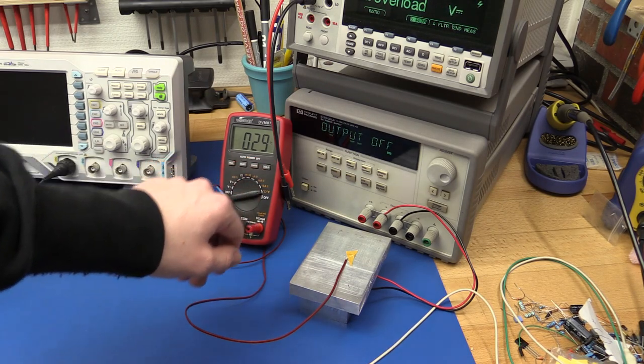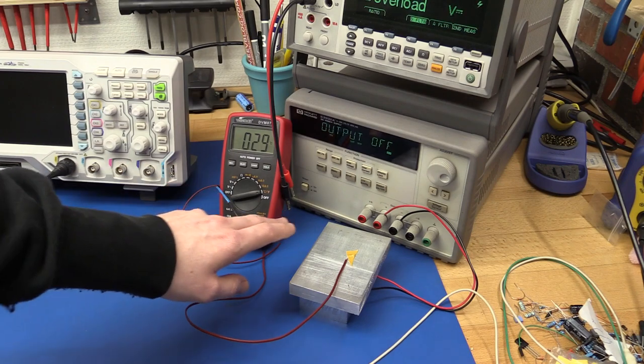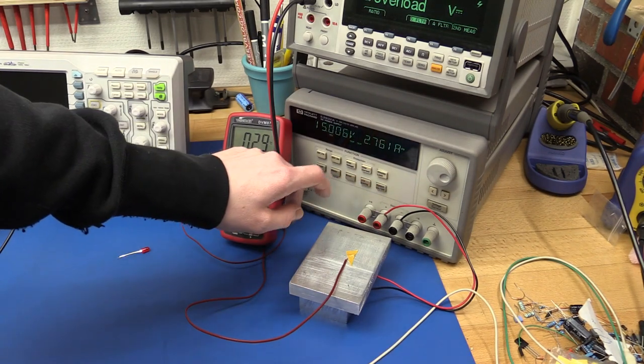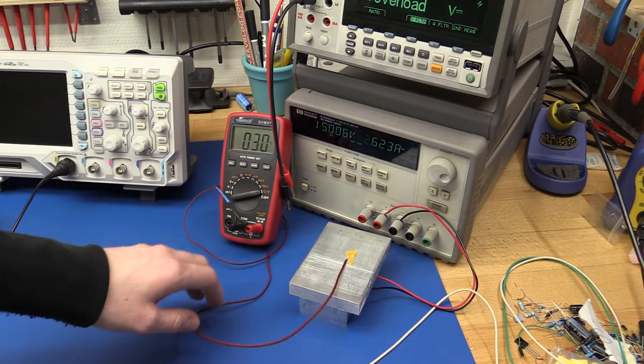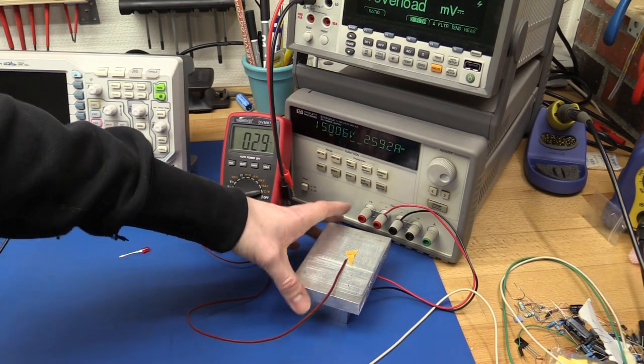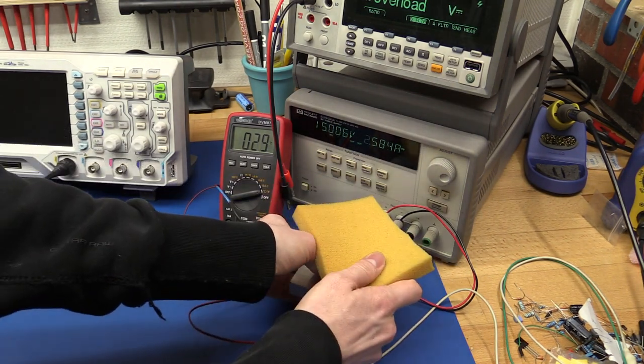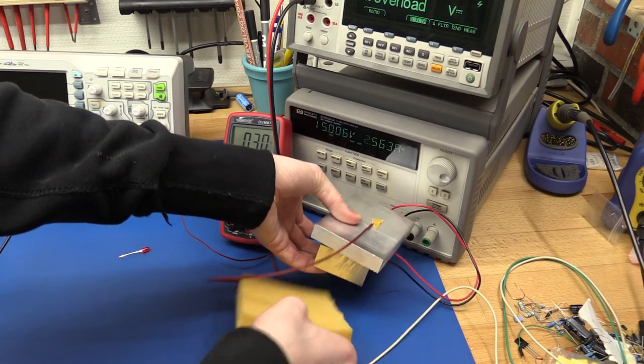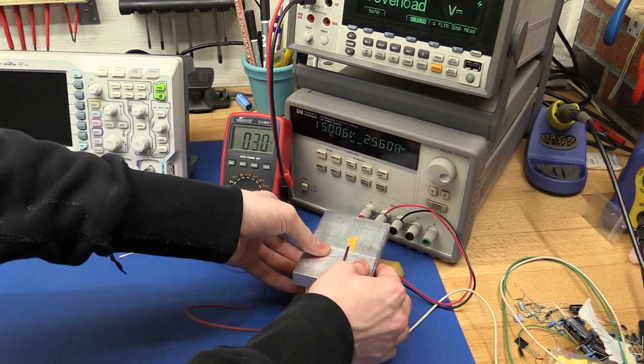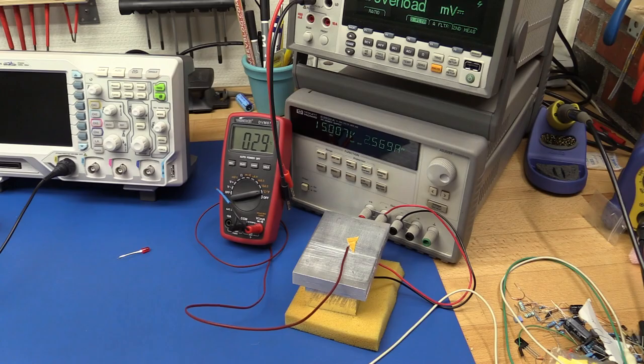So let's try and let the Peltier element do its thing again here. I'm just letting it draw a bit more current this time. But this time we will insulate it a little bit, so the heat won't just go down into the bench.